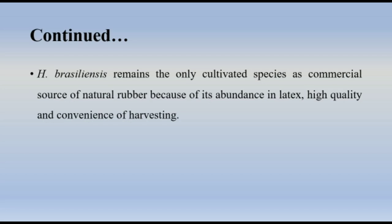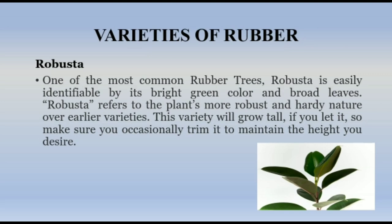Varieties of rubber — Robusta: One of the most common rubber trees, robusta is easily identifiable by its bright green color and broad leaves. Robusta refers to the plant's more robust and hardy nature over earlier varieties. These varieties will grow tall if left unchecked, so make sure to occasionally trim it to maintain the desired height.